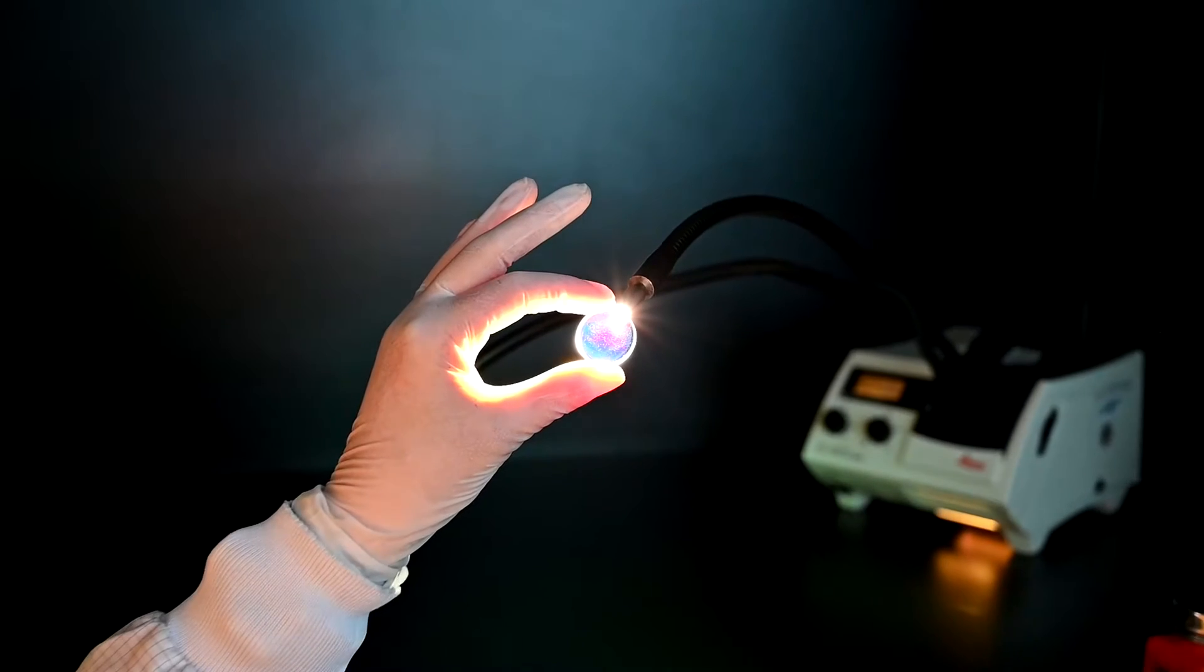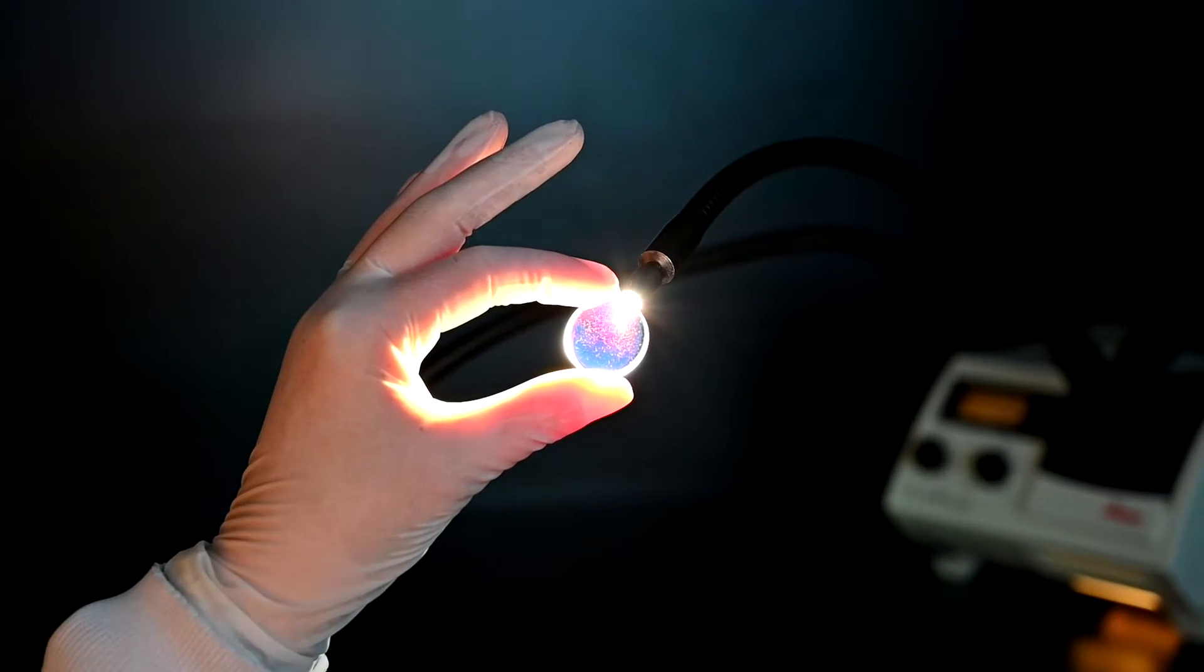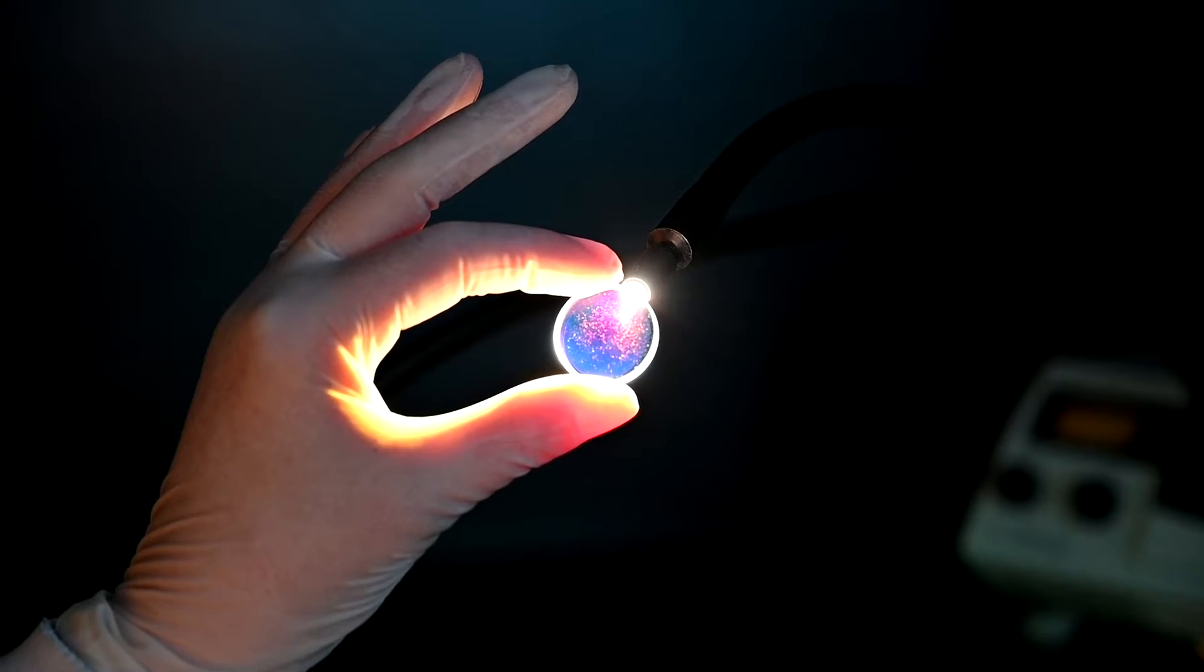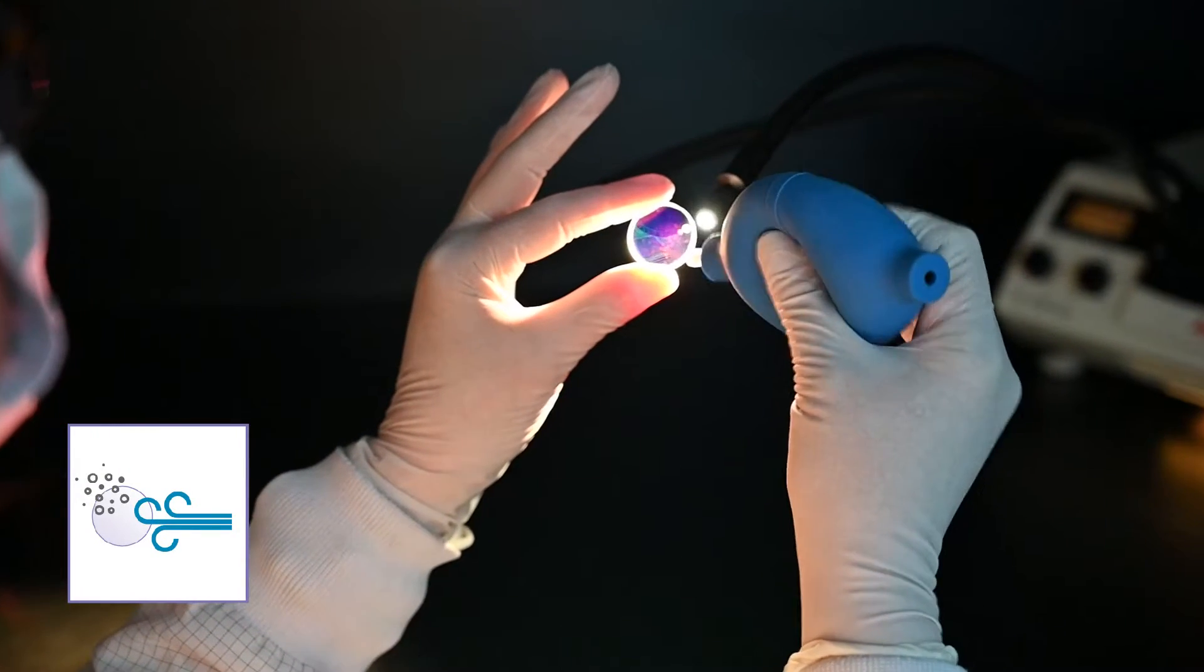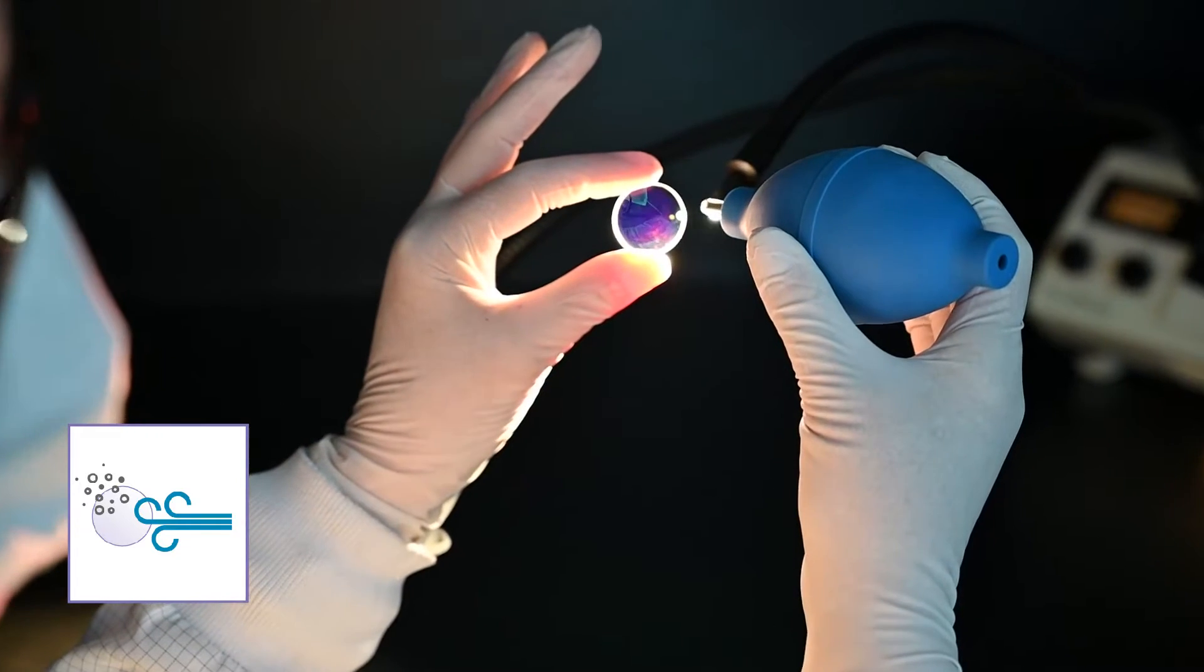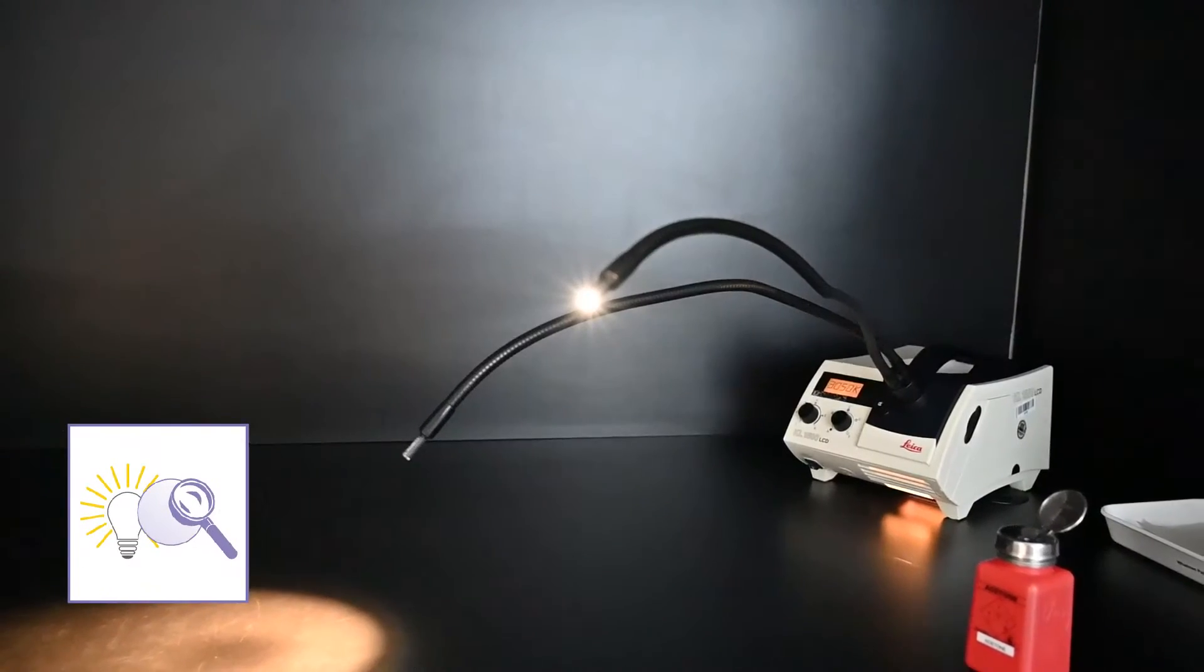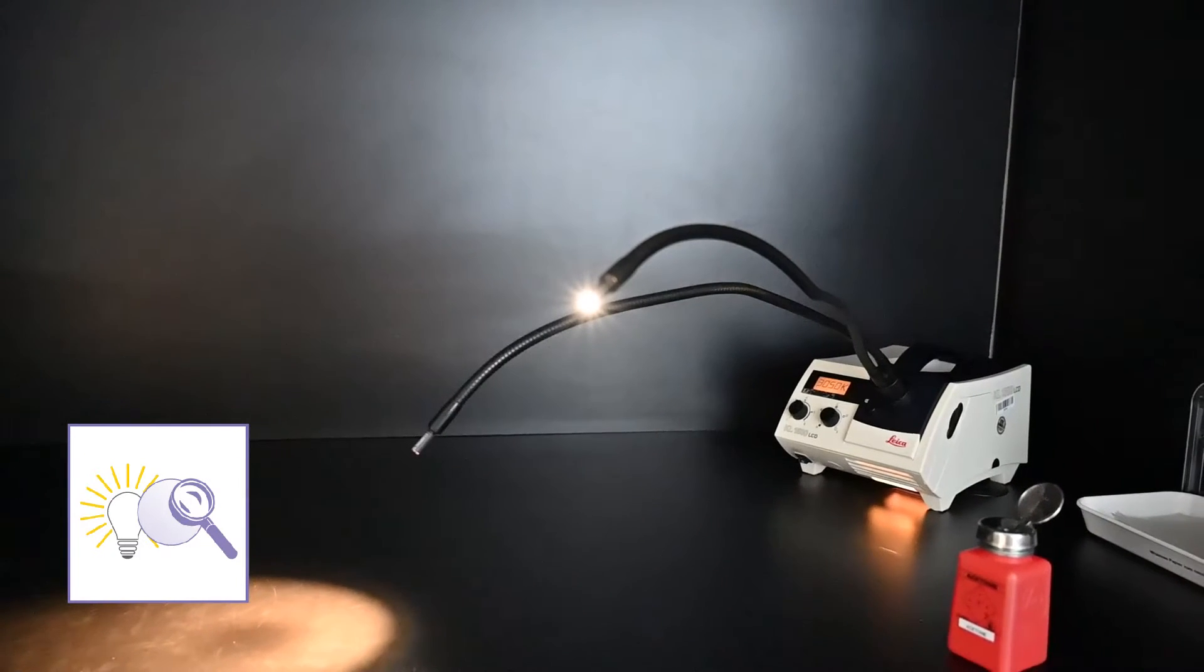Dirt particles on optics should never be removed with ordinary dry cloths, as they may cause scratches. The best way is to use conditioned compressed air, nitrogen, a gas duster, or rubber blower to blow them off. We also recommend using a suitable light source for comprehensive assessment of the optics.